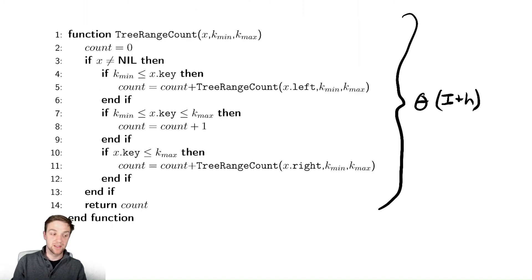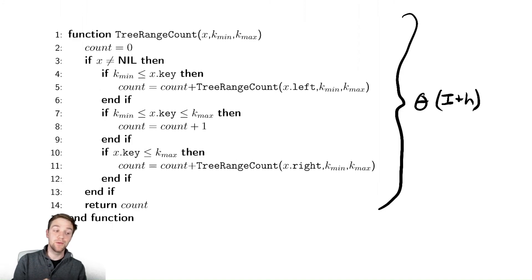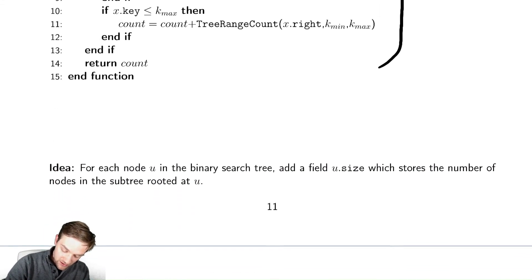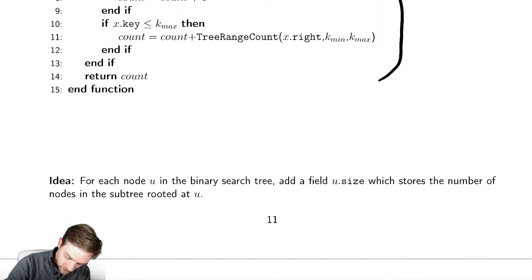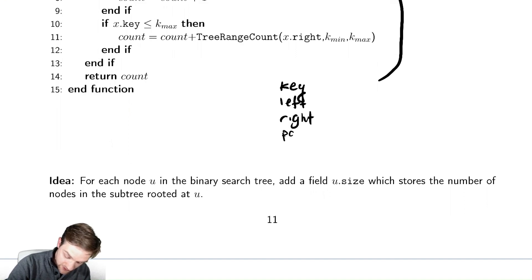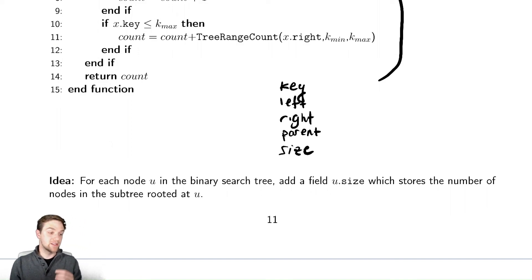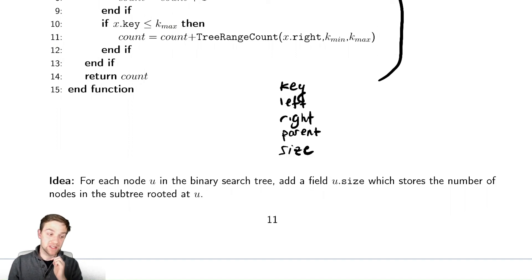A common approach in data structure design when you want to improve runtime is to add new variables to your data structure. Currently our nodes store a key, left, right, and parent. In addition, we're going to add a size field corresponding to the size of the BST rooted at that node. This will help us solve the counting problem more efficiently, as we'll see in the methods that follow.